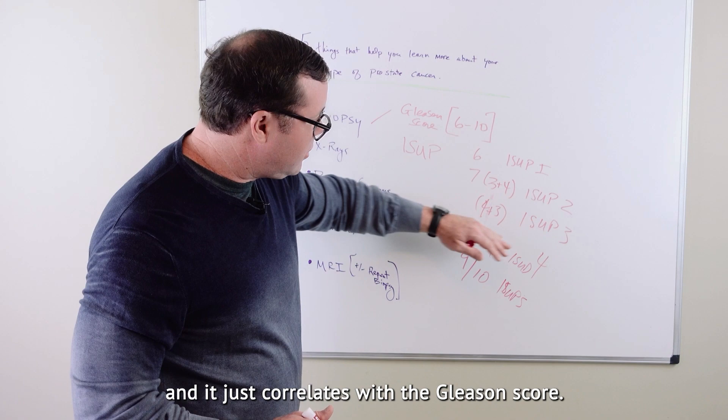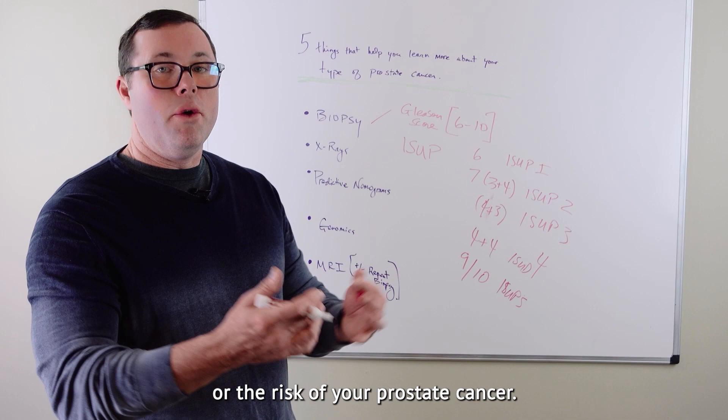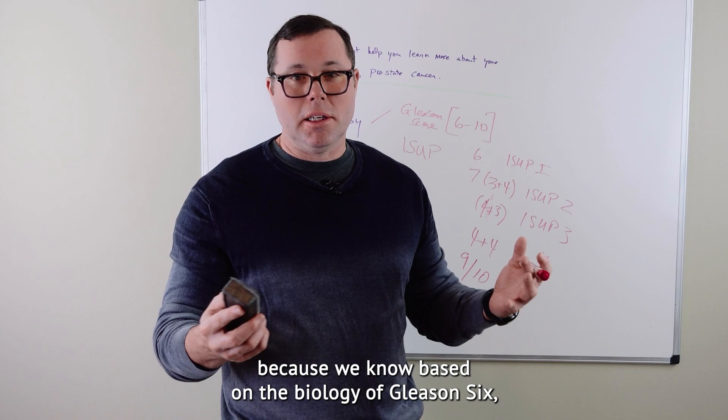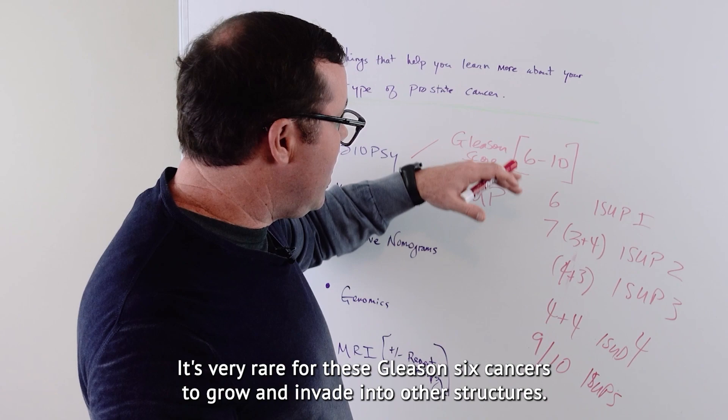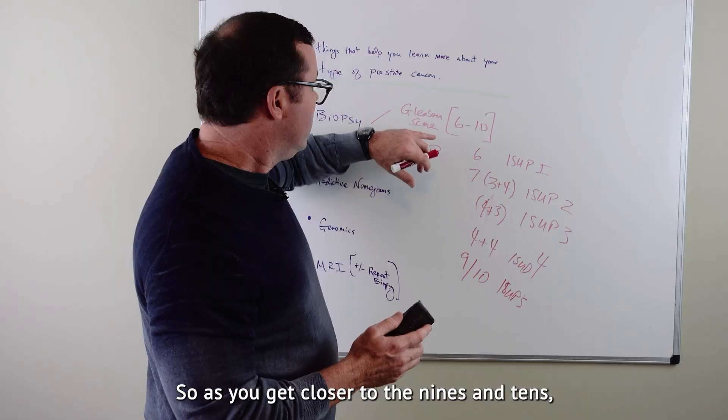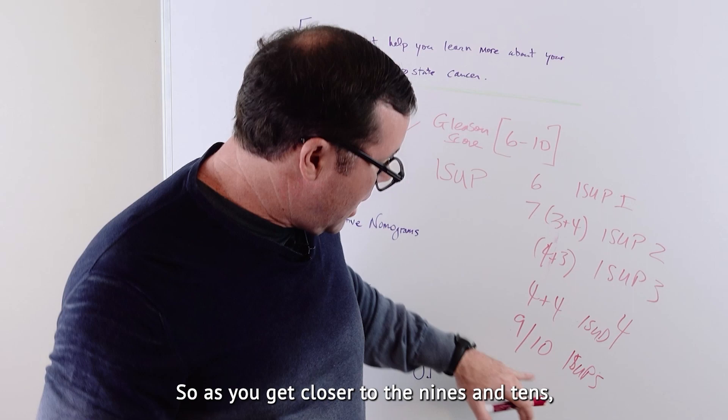So just a different grading score. But sometimes the pathologist will put this ISUP grading score and it just correlates with the Gleason score. It just gets more specific in this Gleason 7 area. So know the Gleason score. It equates essentially to the aggressiveness of your cancer or the risk of your prostate cancer. Many 6s, Gleason 6s, most of these cancers are watched because we know, based on the biology of Gleason 6, it's very rare for these Gleason 6 cancers to grow and invade into other structures.